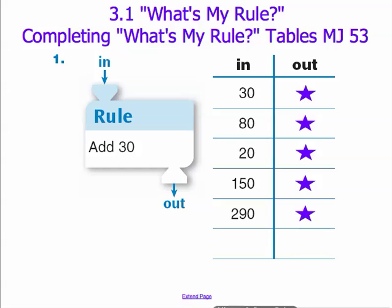The first type of function machine we see here on the board is one of the most common and simplistic function machines, in which our inputs are given, our rule is given, and we need to find our outputs.